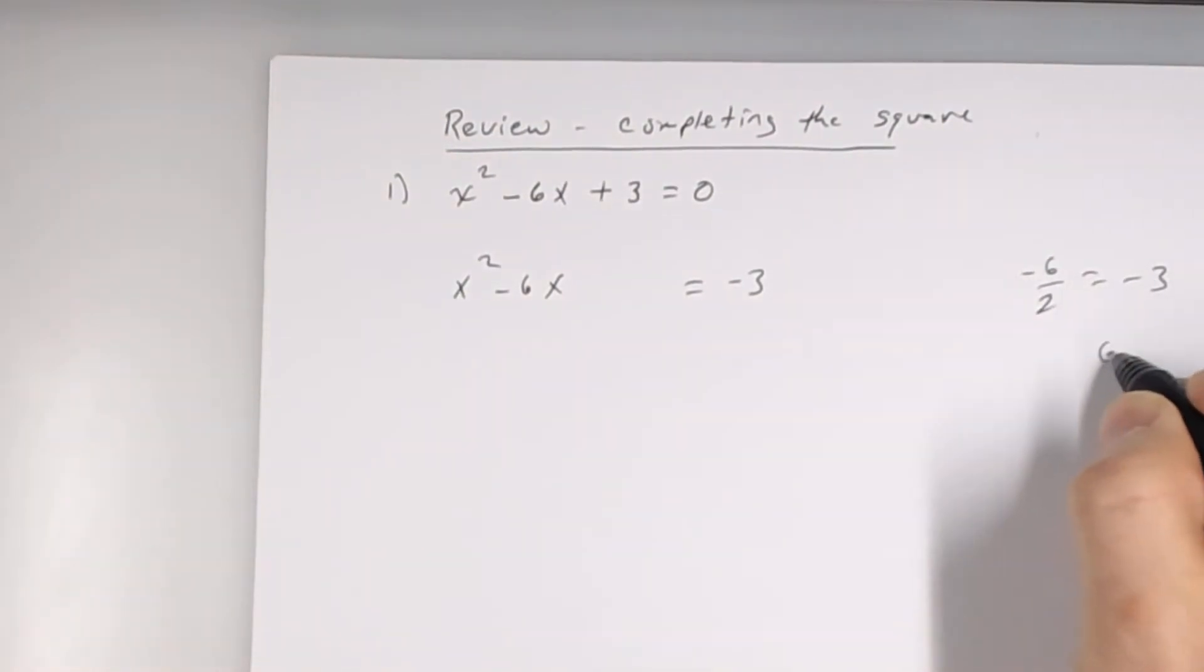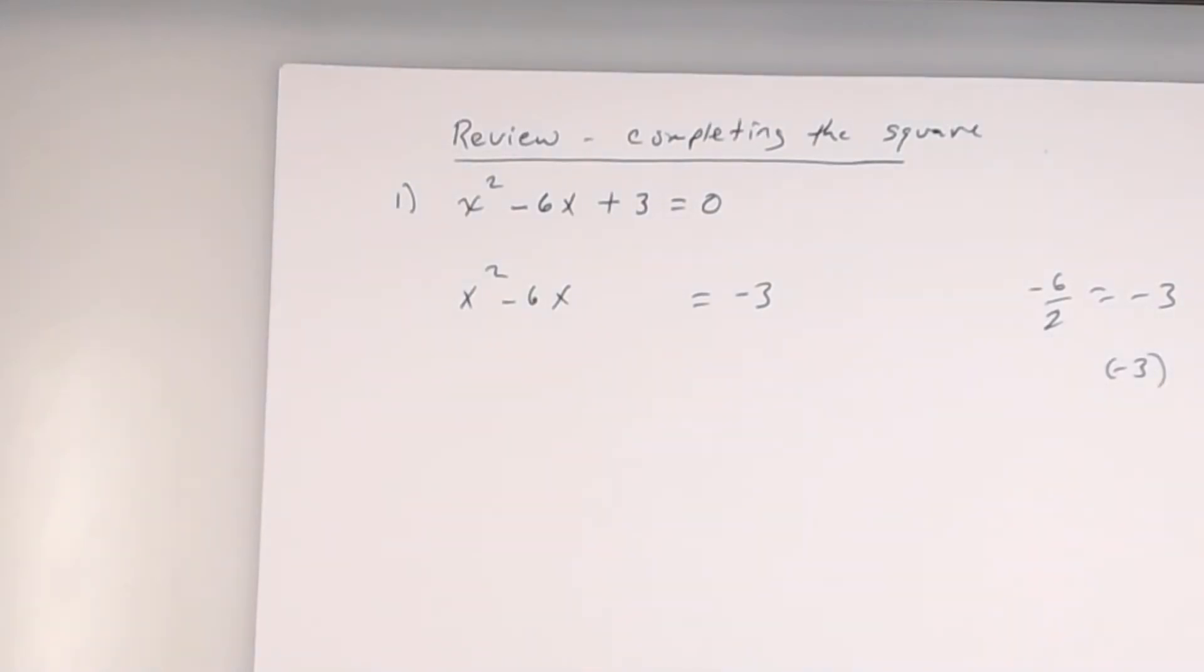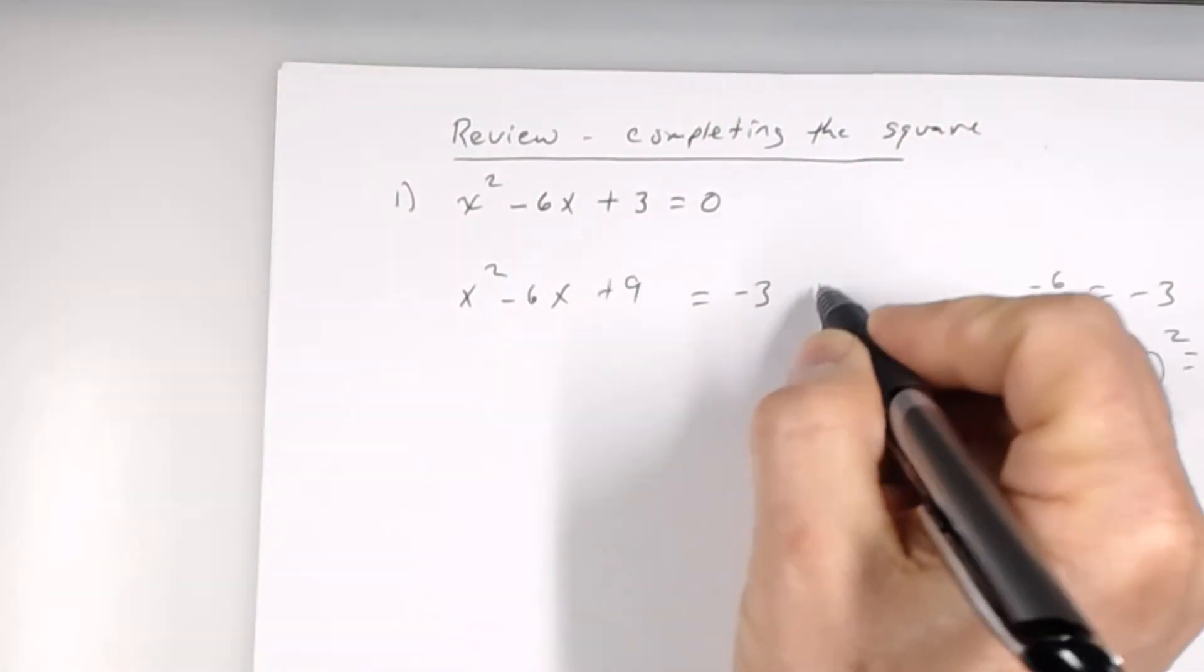Now what do I do to that negative 3, though? Square. I square it. Okay. And when I square it, what do I get? 9. It is that number that you do what? Add to both sides. Add to both sides. Okay.